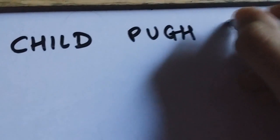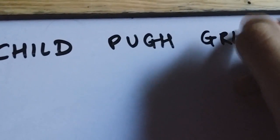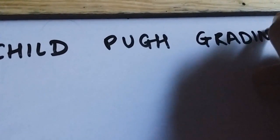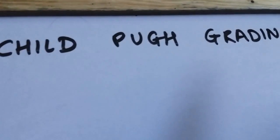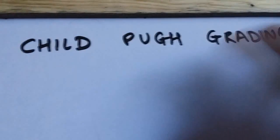Hi everyone, in this video I'll be talking about Child-Pugh's grading system for liver diseases. And this grading system actually just tells you about the severity of liver diseases. And I'm just going to tell you how to remember the whole thing.